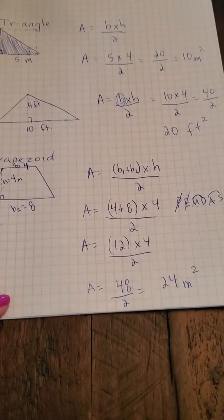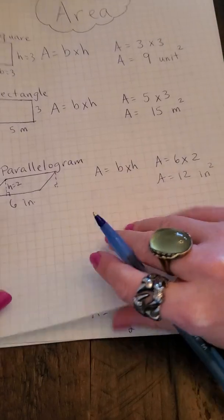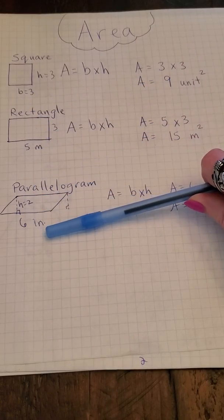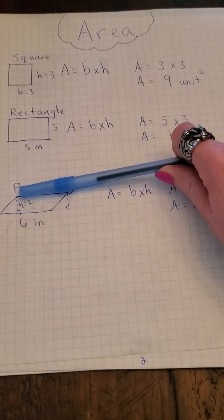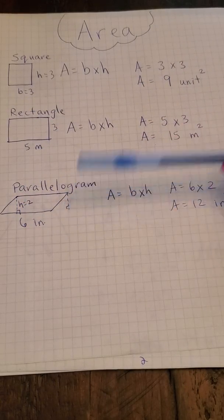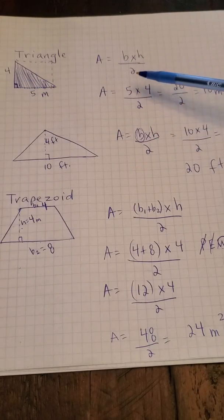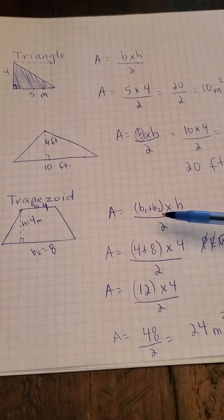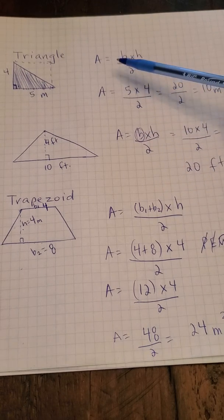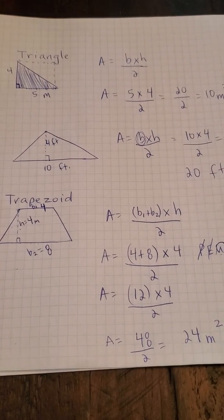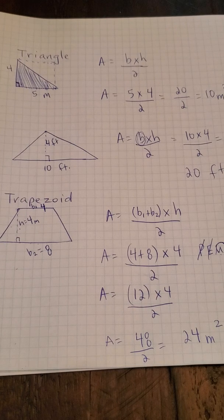The main important formula for area of mixed figures is base times height. All four-sided figures are just base times height — make sure you use the correct height and not the slanted height. For a triangle it's base times height divided by two. For a trapezoid, add the two bases together, then multiply by height and divide by two. We're not going to do circles on this one because it gets more complicated — that will be another video.